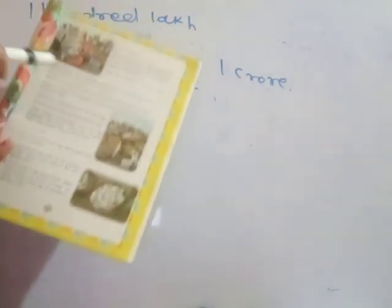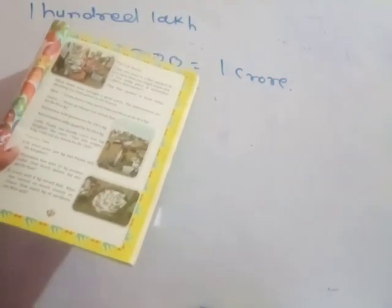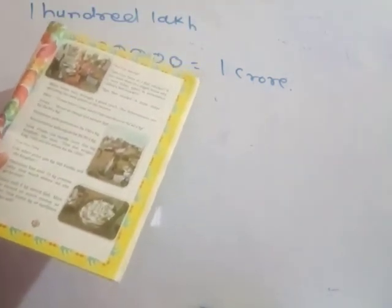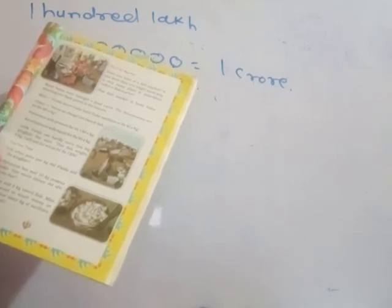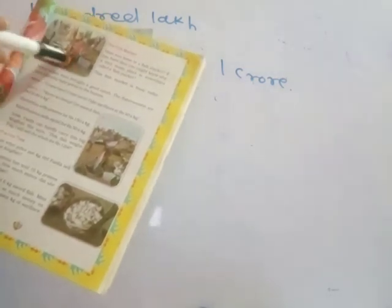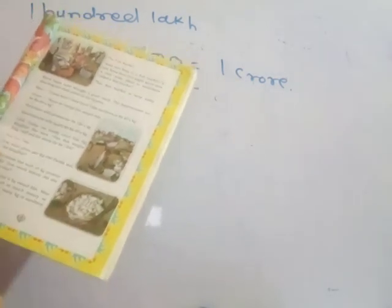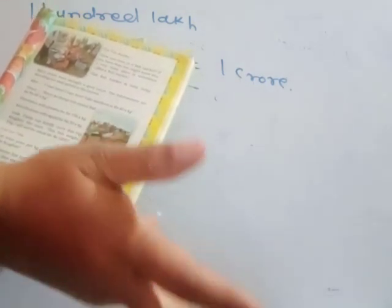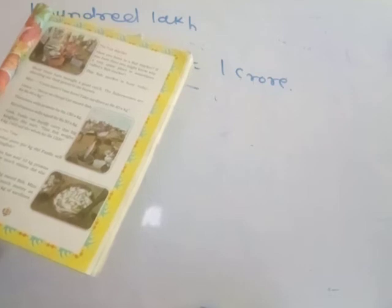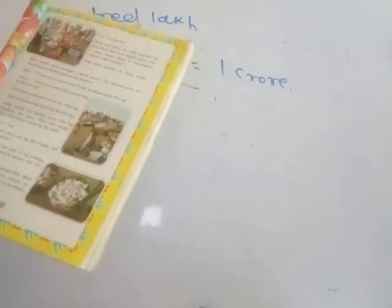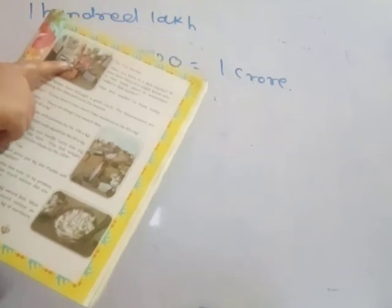Now let's look at a fish market. Have you ever been in a fish market? If you have, then you might know why a very noisy place is sometimes called a fish market — it is very noisy. This fish market is busy today; many boats have brought a good catch, and the fisher women are shouting out their prices to the buyers.